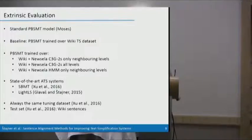Now to extrinsically evaluate, we built several standard phrase-based SMT models in Moses to automatically simplify text. As a baseline, we train the models over WikiText simplification dataset that is already existing. And then we add our Newsela sentence aligned corpus with our best methods, so only neighboring levels or all levels. And also sentence aligned by the state-of-the-art HMM model. And we also compare it with the state-of-the-art automatic text simplification systems which use completely different strategies. So there is a syntactic-based machine translation approach by Xu et al. at 2016. And unsupervised lexical simplification by Glavaš and me in 2015. And we always use the same tuning dataset and the same test set.